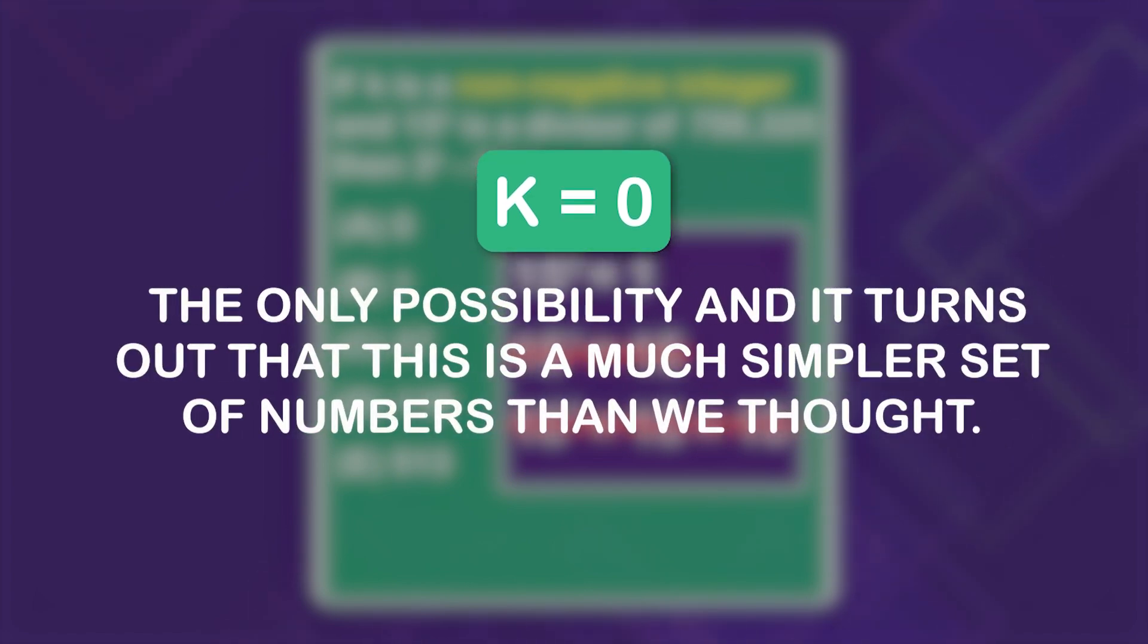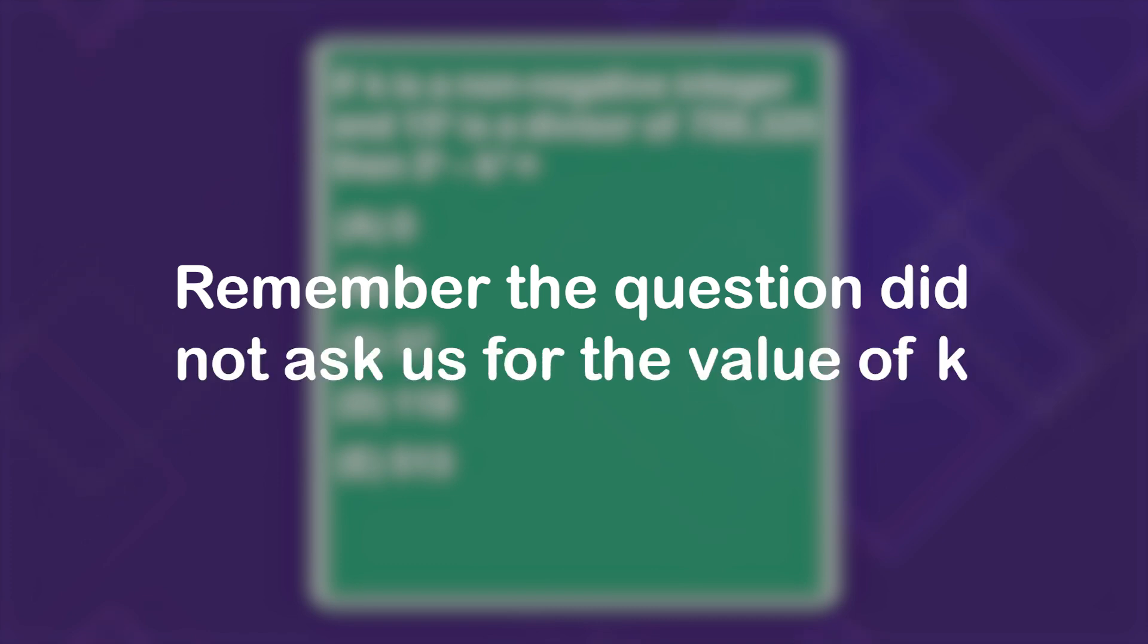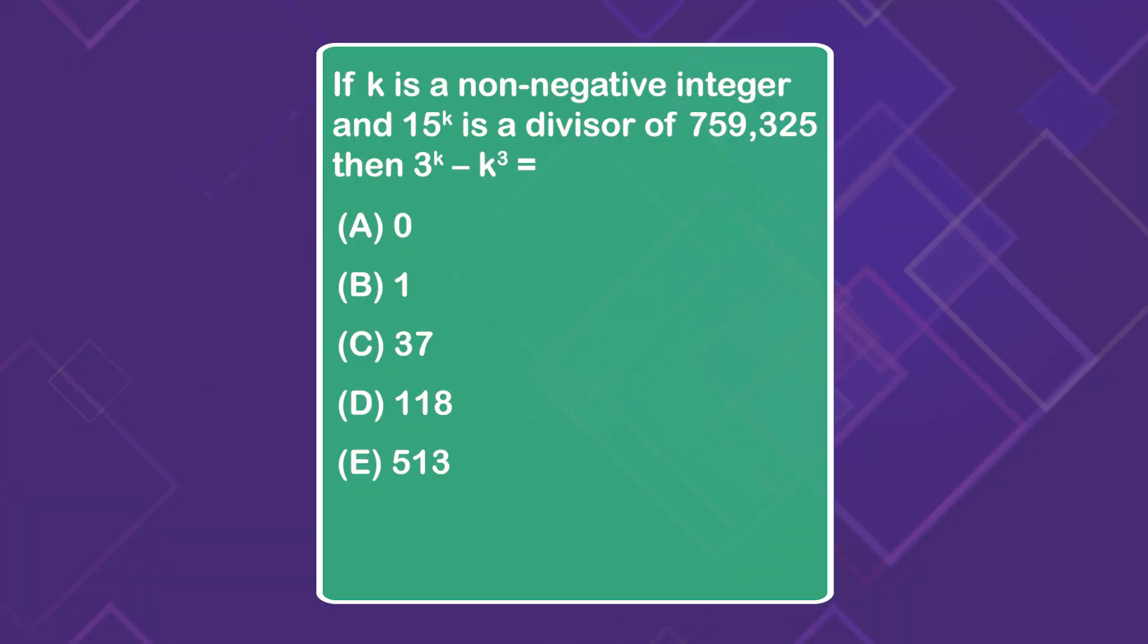And it turns out that this is a much simpler set of numbers than we thought. Be careful, don't just jump to answer choice A and choose 0. Remember the question did not ask us for the value of k, so we have one quick final step. The question asked us to find the value of 3 to the k power minus k to the third power.